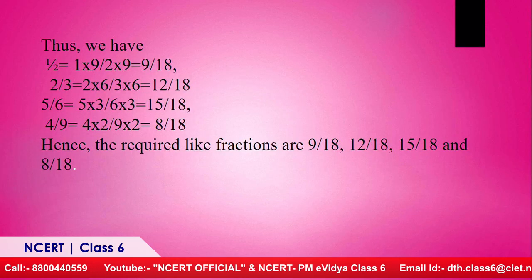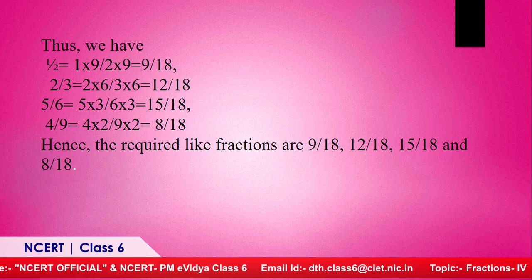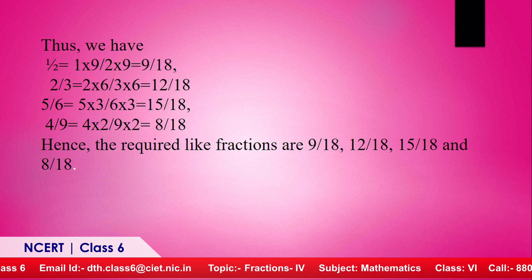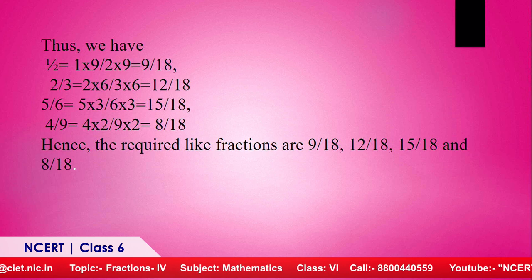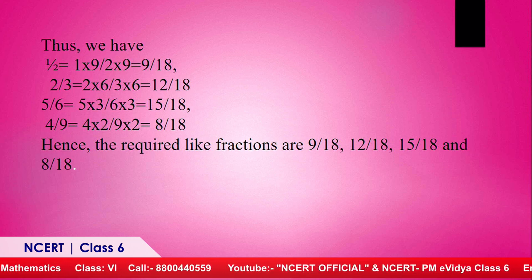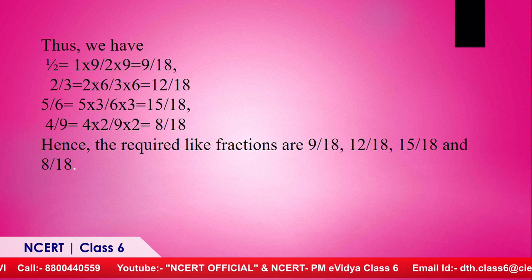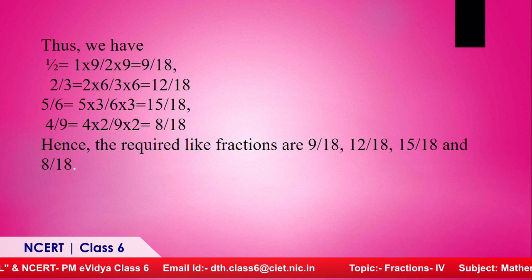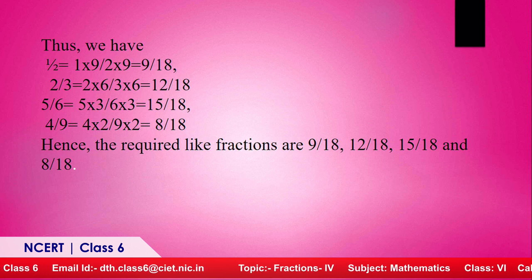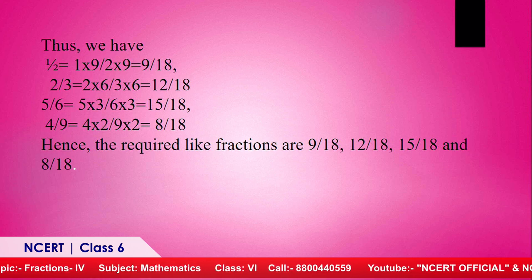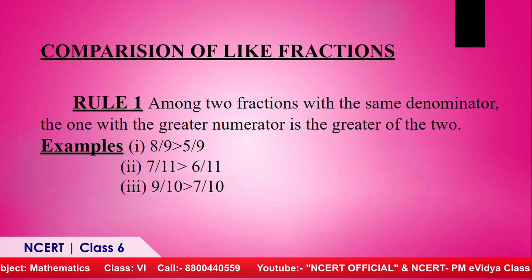We convert each fraction with 18 as the denominator. One upon two equals nine upon eighteen. Two upon three: multiply numerator and denominator by six, giving twelve upon eighteen. Five upon six: multiply by three, giving fifteen upon eighteen. Four upon nine: multiply by two, giving eight upon eighteen. The required like fractions are nine upon eighteen, twelve upon eighteen, fifteen upon eighteen, and eight upon eighteen.